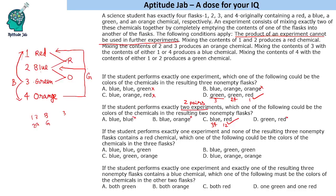Next question: if the student performs exactly one experiment and none of the resulting three non-empty flasks contains a red chemical, which one of the following could be the colors of the chemicals in the three flasks? Two things to keep in mind: red has to be used (removed), and we should not mix flasks 1 and 2 - because mixing 1 and 2 produces red again.